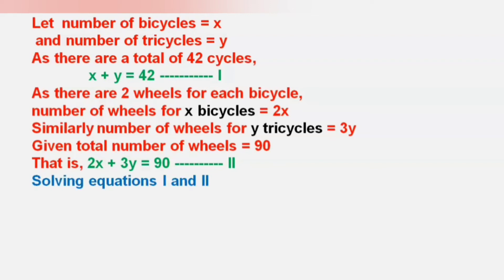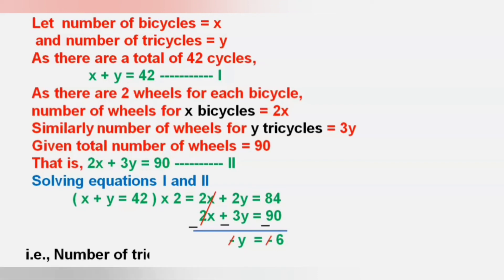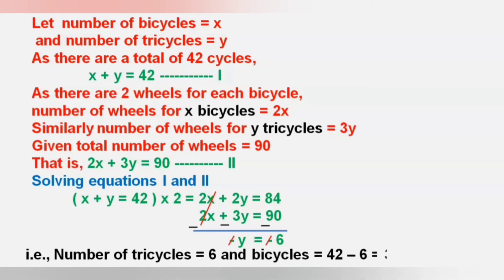Solving equations 1 and 2: multiplying the first equation by 2 we get 2x plus 2y equals 84, and the second equation is 2x plus 3y equals 90. Subtracting these two equations, the signs of the second expression change to opposite. So 2x and minus 2x get cancelled, and plus 2y minus 3y gives minus y. 84 minus 90 gives minus 6, so y equals 6. Since y is the number of tricycles, the number of tricycles is 6 and the number of bicycles is 42 minus 6, that is 36.